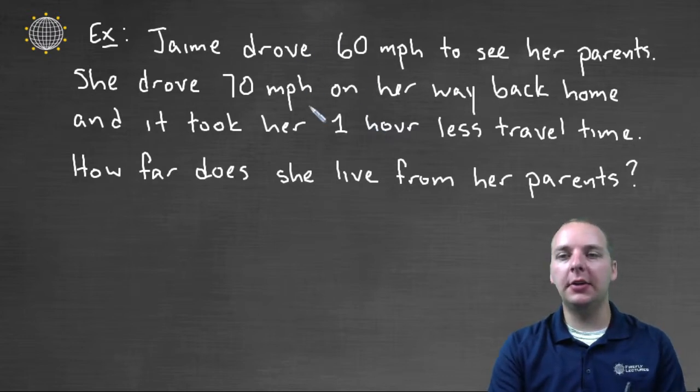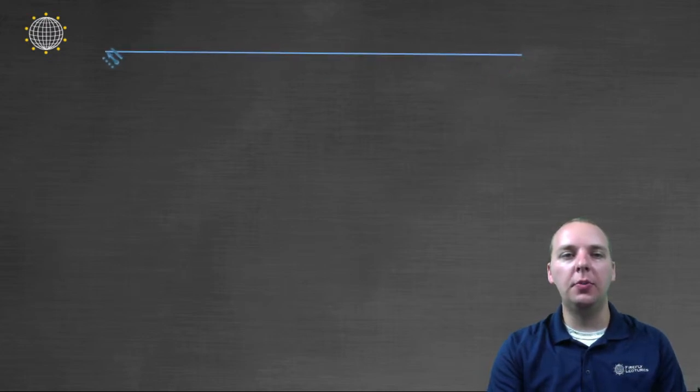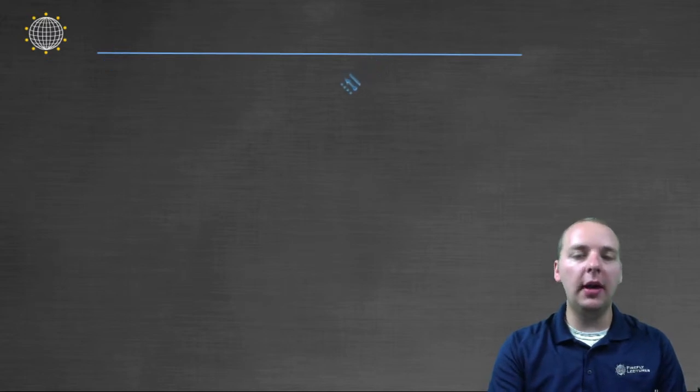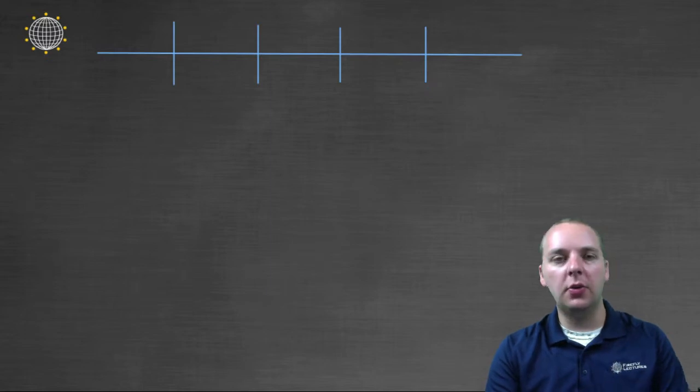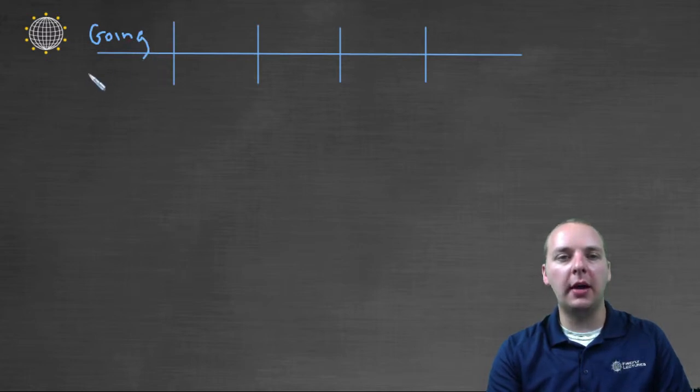So let's see if we can solve this guy here. One thing I highly recommend doing when you're doing a motion problem is to make a table. Tables are very helpful when you're doing motion problems. And in your table, you should have two situations. You should have like a going and a coming. And so we'll have a going row and a coming back row. And then we'll have columns for distance, rate, and time. I'm sorry if this table doesn't look perfect, but I think it'll do just fine. Okay, so we'll label this row here the going to her parents house row, and we'll label this the coming back.